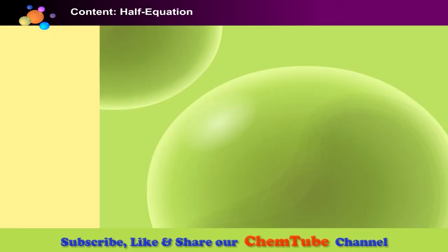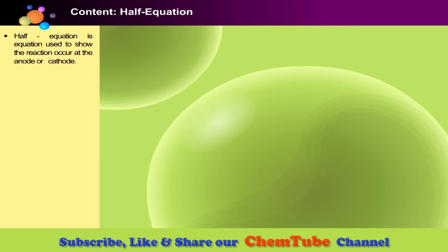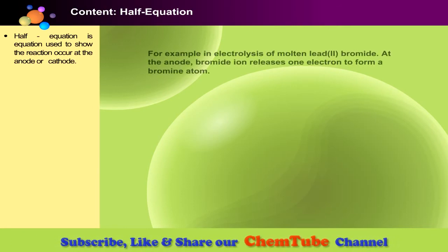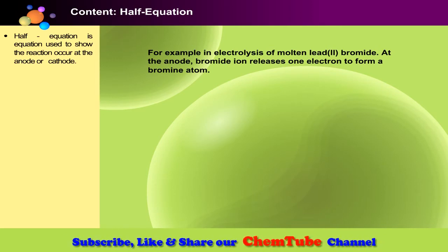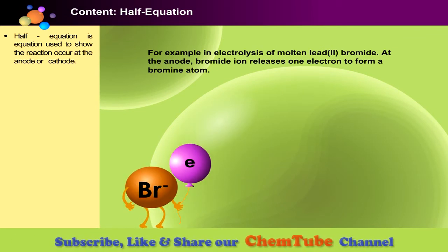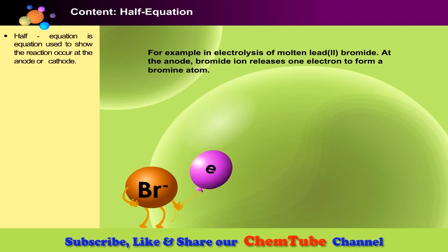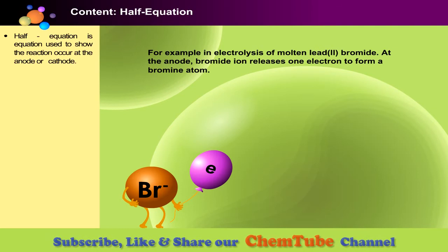Half-equation. Half-equation is the equation used to show the reaction occurring at the anode or cathode. For example, in electrolysis of molten lead(II) bromide, at the anode, bromide ion releases one electron to form a bromine atom. Two bromine atoms combine to form a bromine molecule. This explanation can be simplified using half equation.